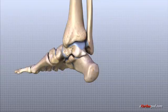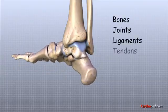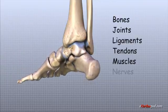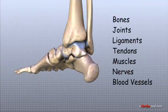The important structures of the ankle include bones, joints, ligaments, tendons, muscles, nerves and blood vessels.